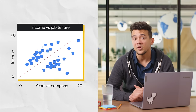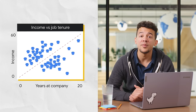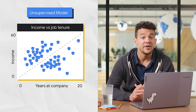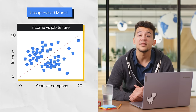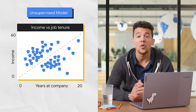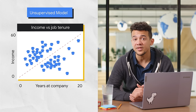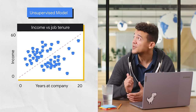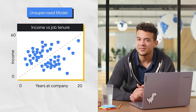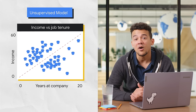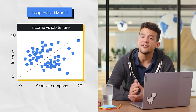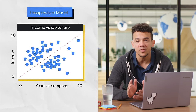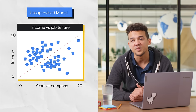This is an example of the sort of problem that an unsupervised model might try to solve. Here, you want to look at tenure and income and then group or cluster employees to see whether someone is on the fast track. Unsupervised problems are all about discovery — about looking at the raw data and seeing if it naturally falls into groups.